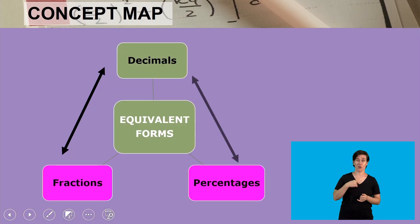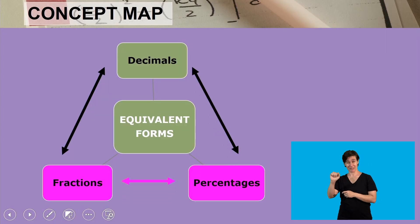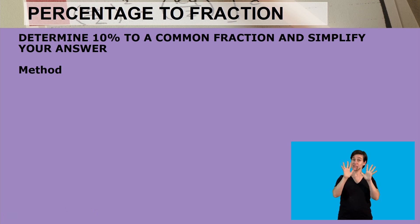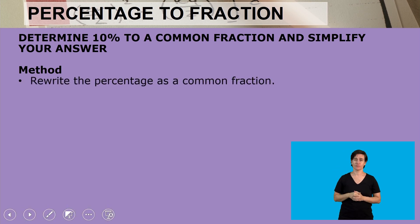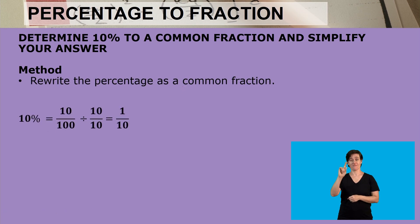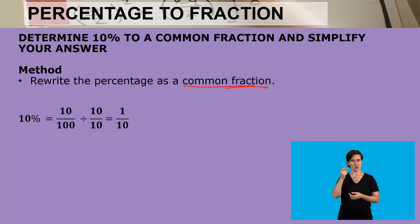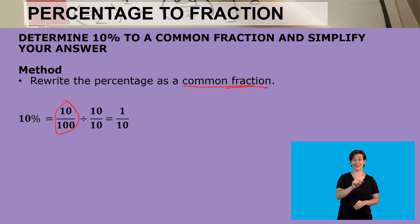We are now going to the part where we convert percentages to fractions and vice versa. The first one is 10% written as a common fraction, simplifying our answer. The method we use is to rewrite the percentage as a common fraction — the percentage sign represents a denominator of a hundred. So 10% divided by a hundred gives us ten hundredths.